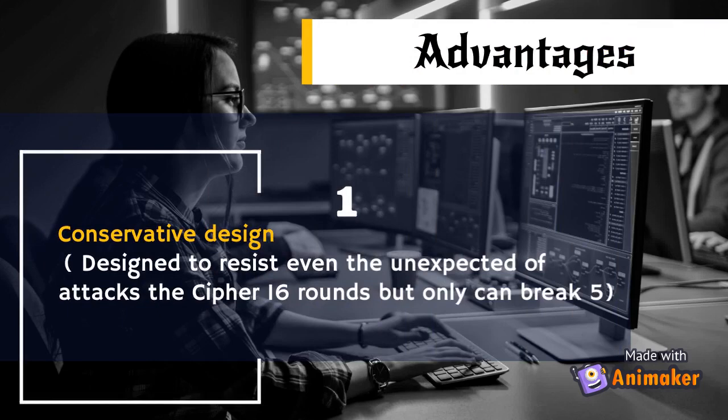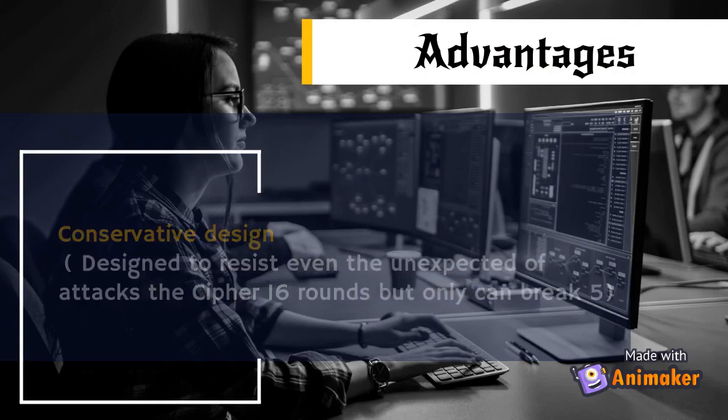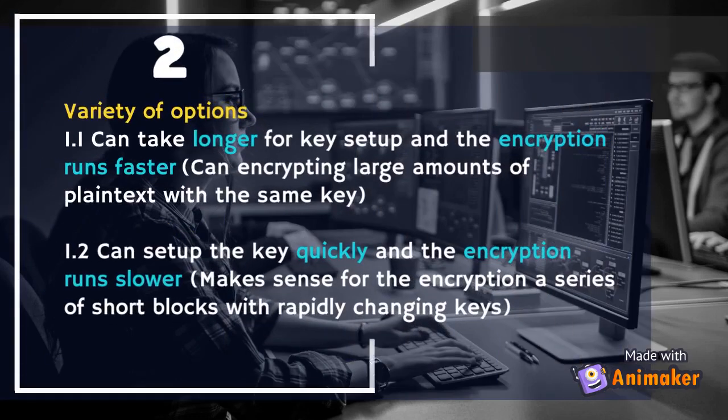Conservative design: Twofish is designed to resist even unexpected attacks. The cipher has 16 rounds, but attacks can only break 5. Variety of options: it can take longer for key setup while encryption runs faster, suitable for encrypting large amounts of plaintext with the same key. Alternatively, it can set up the key quickly while encryption runs slower, which makes sense for encrypting a series of short blocks with rapidly changing keys.